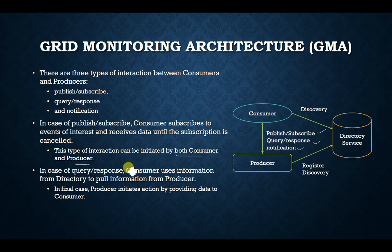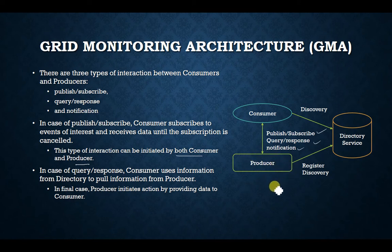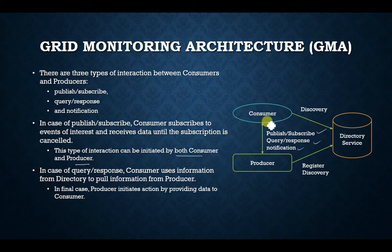In query-and-response, the consumer uses information from the directory to pull information from producers. The consumer knows which component to monitor but may not know what services the producer offers. All data is present inside the producer, who registers available data in the directory services. The consumer queries the directory service to find out what services are available from any producer, then directly queries the producer to get the data.